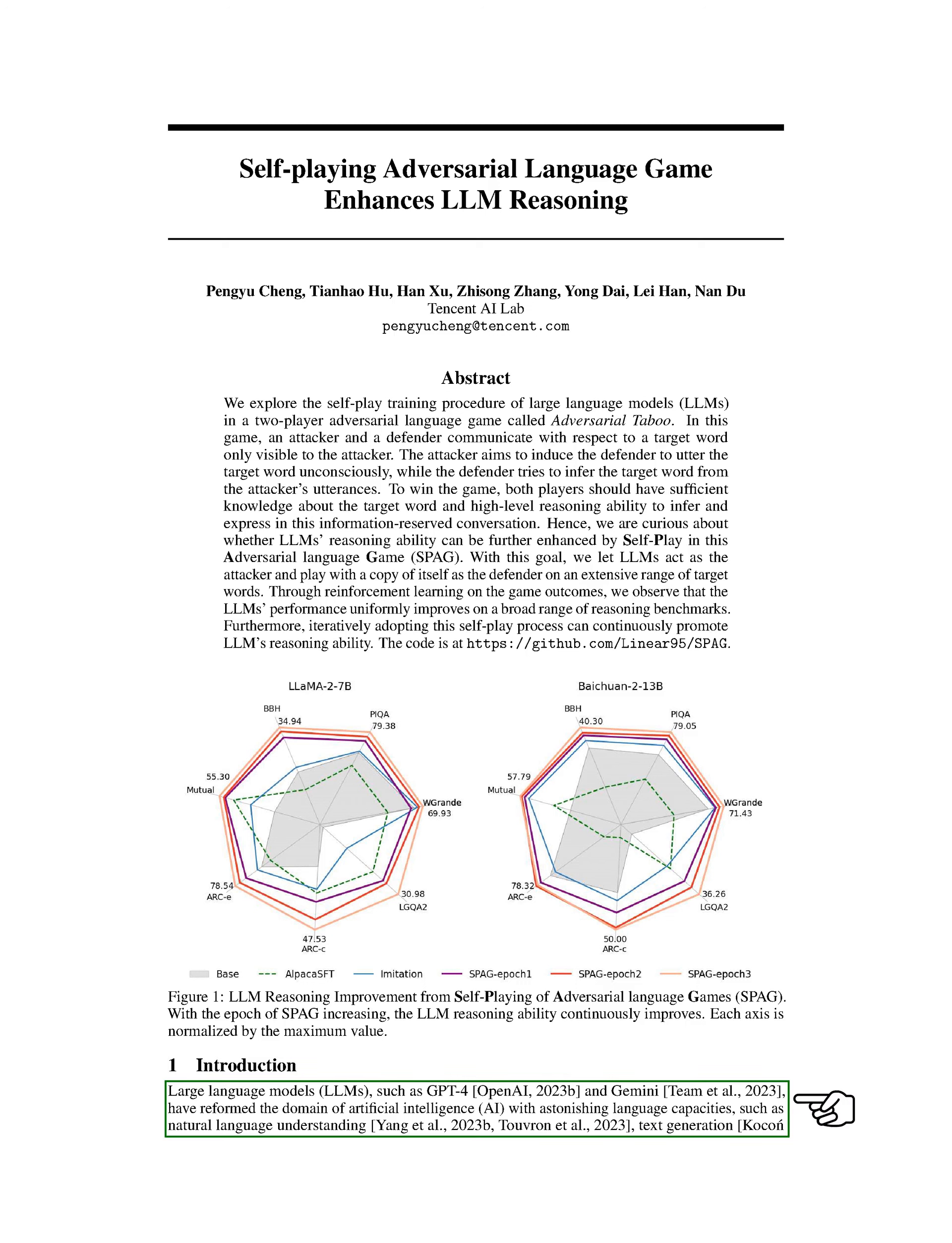Introduction. In this section, we explored how large language models like GPT-4 and Gemini have transformed artificial intelligence by excelling in language tasks such as understanding, generating text, translating, and programming.